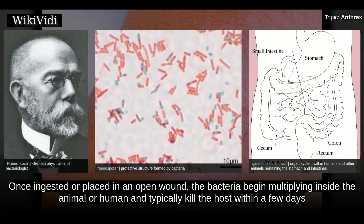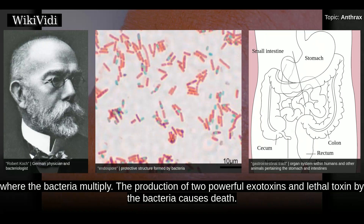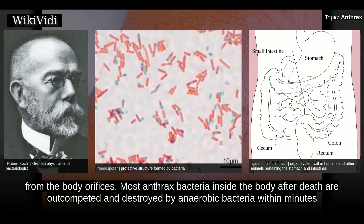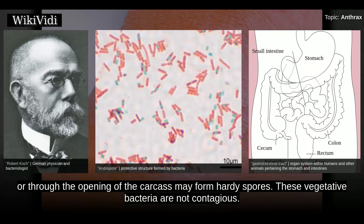Once ingested or placed in an open wound, the bacteria begin multiplying inside the animal or human and typically kill the host within a few days or weeks. The endospores germinate at the site of entry into the tissues and then spread by the circulation to the lymphatics, where the bacteria multiply. The production of two powerful exotoxins and lethal toxin by the bacteria causes death. Veterinarians can often tell a possible anthrax-induced death by its sudden occurrence and by the dark, non-clotting blood that oozes from the body orifices. Most anthrax bacteria inside the body after death are outcompeted and destroyed by anaerobic bacteria within minutes to hours post-mortem.